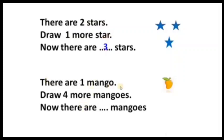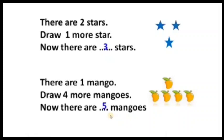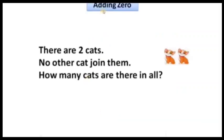There is one mango. Draw four more mangoes. Now there are dash mangoes — first one mango and four more mangoes added: total five mangoes.